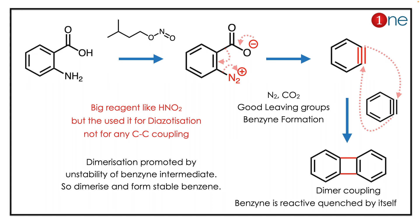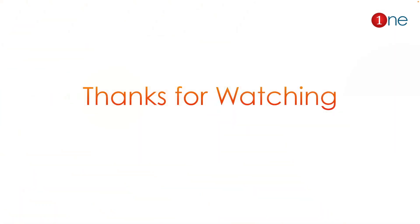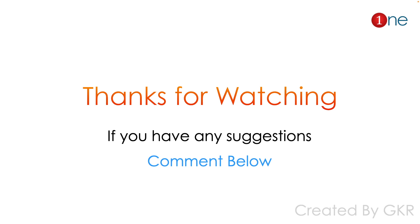Benzyne has to be quenched. The way benzyne quenches is by dimerization — dimerization coupling leads to a fused benzene ring. The key concept here is that two very good leaving groups lead to the benzyne mechanism. Benzyne is highly unstable, and here it is quenched by itself through dimerization.